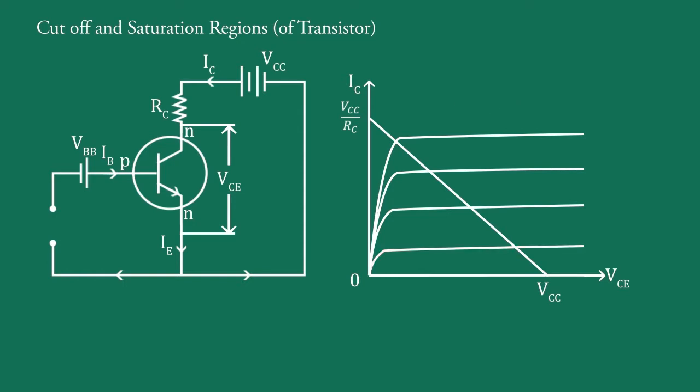This is the curve of IC versus VCE when IB equals 0, and this is the curve of IC versus VCE when IB is saturated, that is maximum.